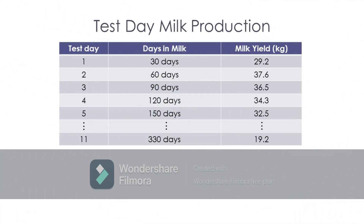Now, let's use this hypothetical test day milk production record as an example. In this table, test day refers to a specific day during lactation when milk yield was recorded. Testing is done at a regular interval of either once a week, every two weeks, or once a month, depending on the capability of the raiser to do the recording.